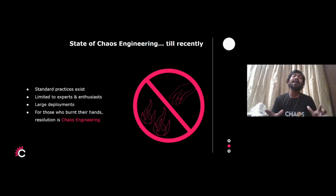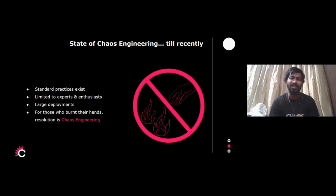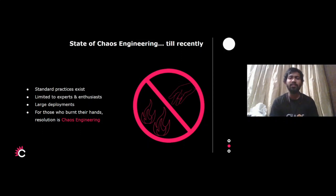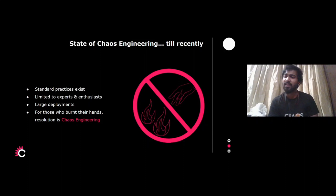What is the state of chaos engineering today? There are standard practices — big companies like Amazon, Netflix, Flipkart, Apple, and Google have already started practicing chaos in some way. But this is still limited to experts and enthusiasts who are already aware of what chaos engineering does. It's part of large deployments — companies like IBM are applying chaos at scale. But we believe that small deployments and individual engineers should also get started, because chaos engineering can be a resolution for each and every engineer or company.